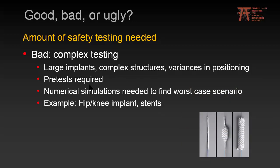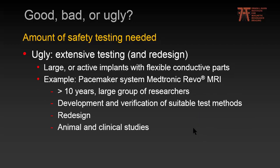Bad implants need complex testing — usually some pre-tests and long-lasting numerical simulations to find a worst-case scenario. These are typically large implants with complex structure that may vary in positioning, such as stent grafts, whose structure is quite complex and looks different when inflated in the body compared to when taken out of the packaging. Ugly implants need extensive testing and maybe even redesign — these are large or active implants with long, flexible, conductive parts. An example is the Medtronic Revo pacemaker system, the very first MR-conditional pacemaker, which took a large group of researchers more than 10 years to bring to market.